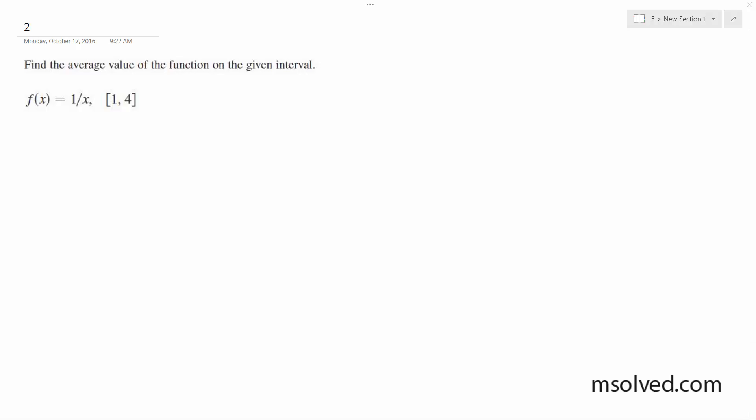We want to find the average value for this problem. f average is going to be equal to 1 over b minus a, from a to b, f of x dx.